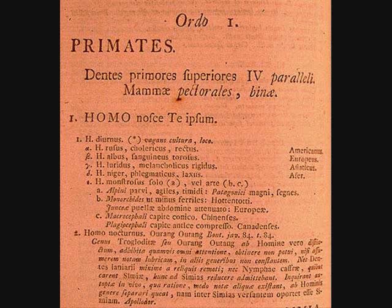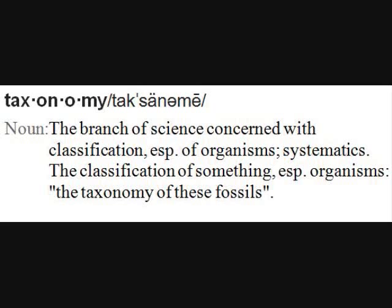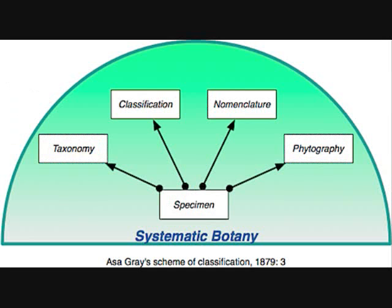Linnaeus' system of classification was the first formal system of taxonomic organization. Taxonomy is a discipline of biology primarily concerned with identifying, naming, and classifying species based on natural relationships.